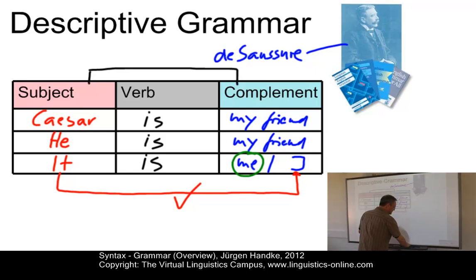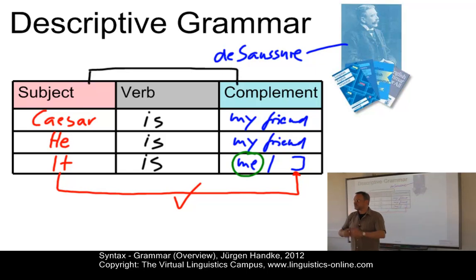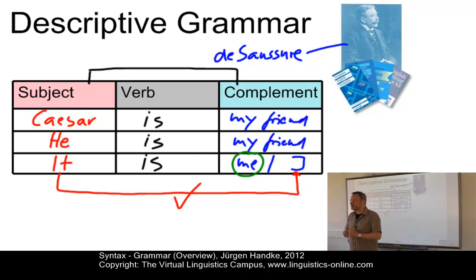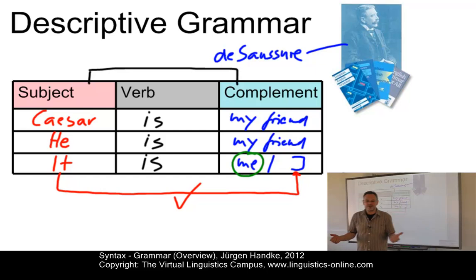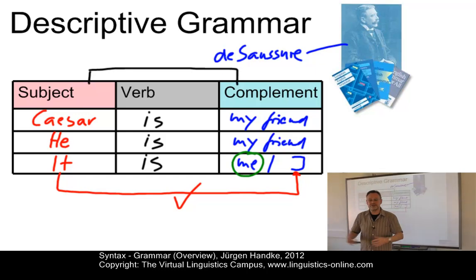However, what we really use in the English language is 'it is me.' So in a descriptive grammar of present-day English, we will find that neither the nominative case exists in this context, nor does the form 'it is I.' 'It is me' is used instead. This is a typical example of descriptivism.